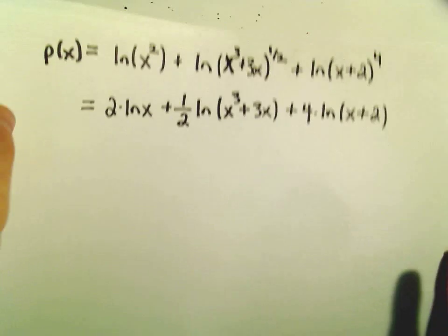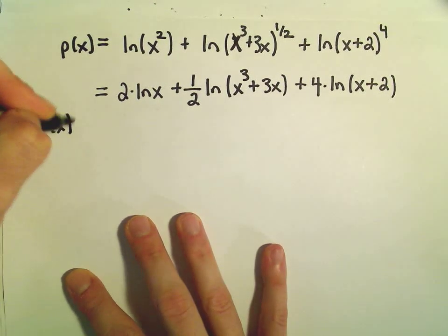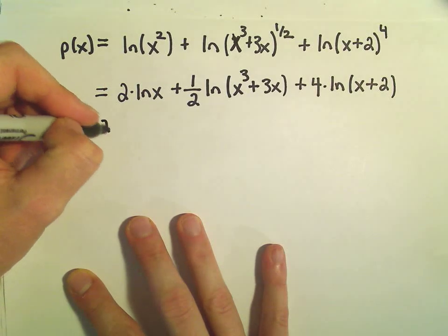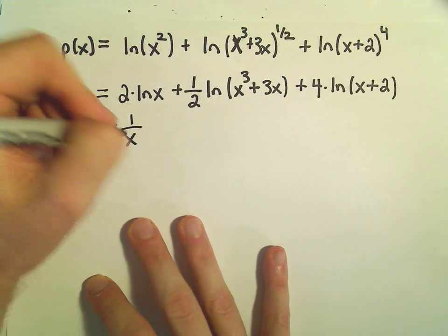So now we will start taking the derivative just using the rules that we've seen. Our constant gets carried along, the 2. The derivative of ln of x, we've seen, that's just 1 over x.